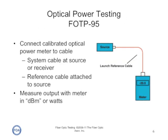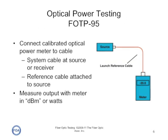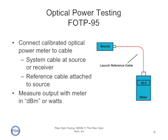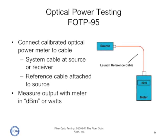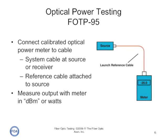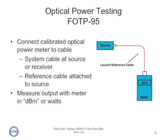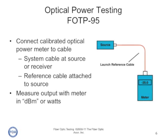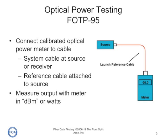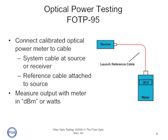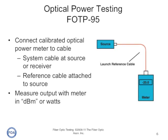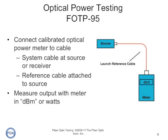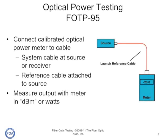The standard way of measuring optical power is covered in a TIA standard, FOTP-95, and it's accepted internationally. Basically, we connect a calibrated optical power meter to the cable, set it to the correct wavelength, and measure the input in dBm or watts.